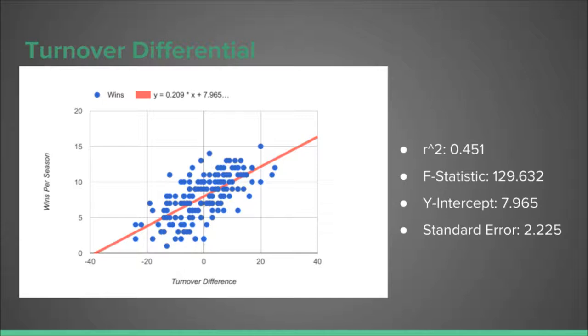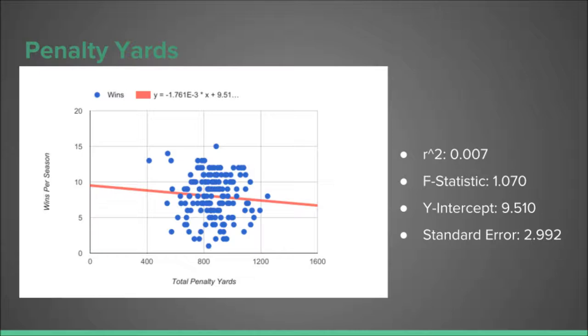Of all the variables that we tested, turnover differential had both the highest correlation and the lowest standard error of predicted wins.